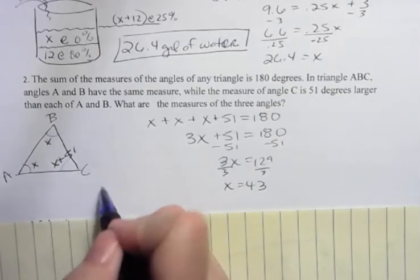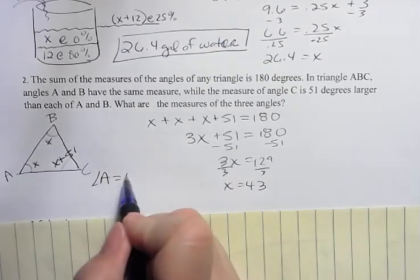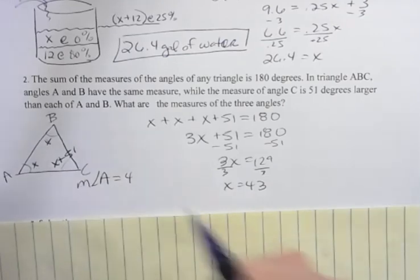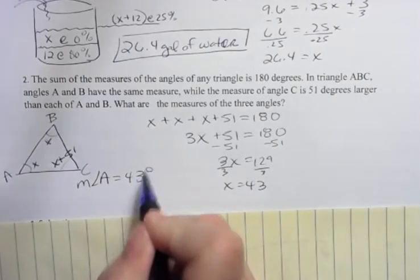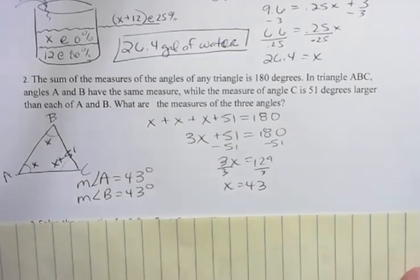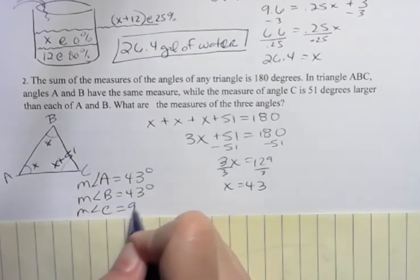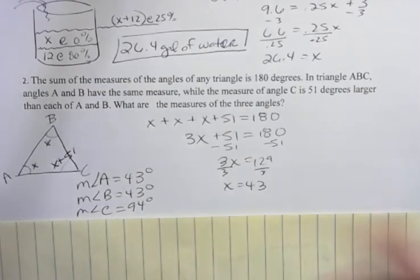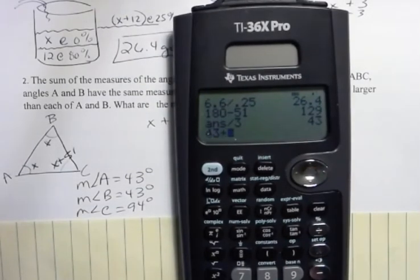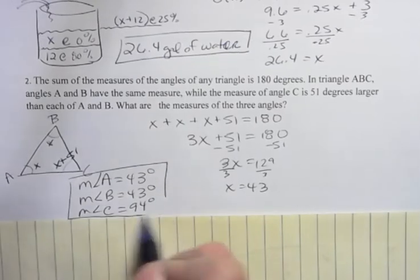And so that gives me X equals 43. So the measure of angle A is 43 degrees. And the measure of angle B is also 43 degrees. But what's the measure of angle C? Well, it's 43 plus 51, which is 94. And then you can add those together to see 43 plus 43 plus 94, that equals 180. So that works out. So there's the measures of our three angles.